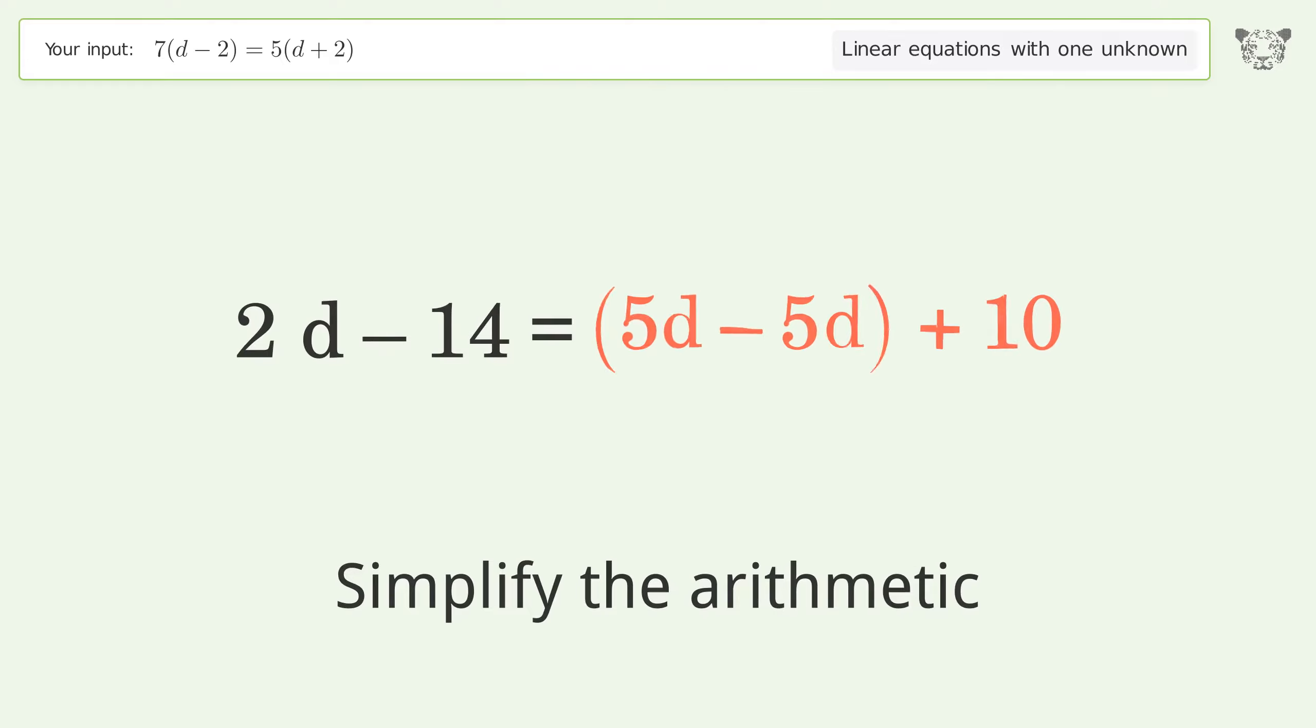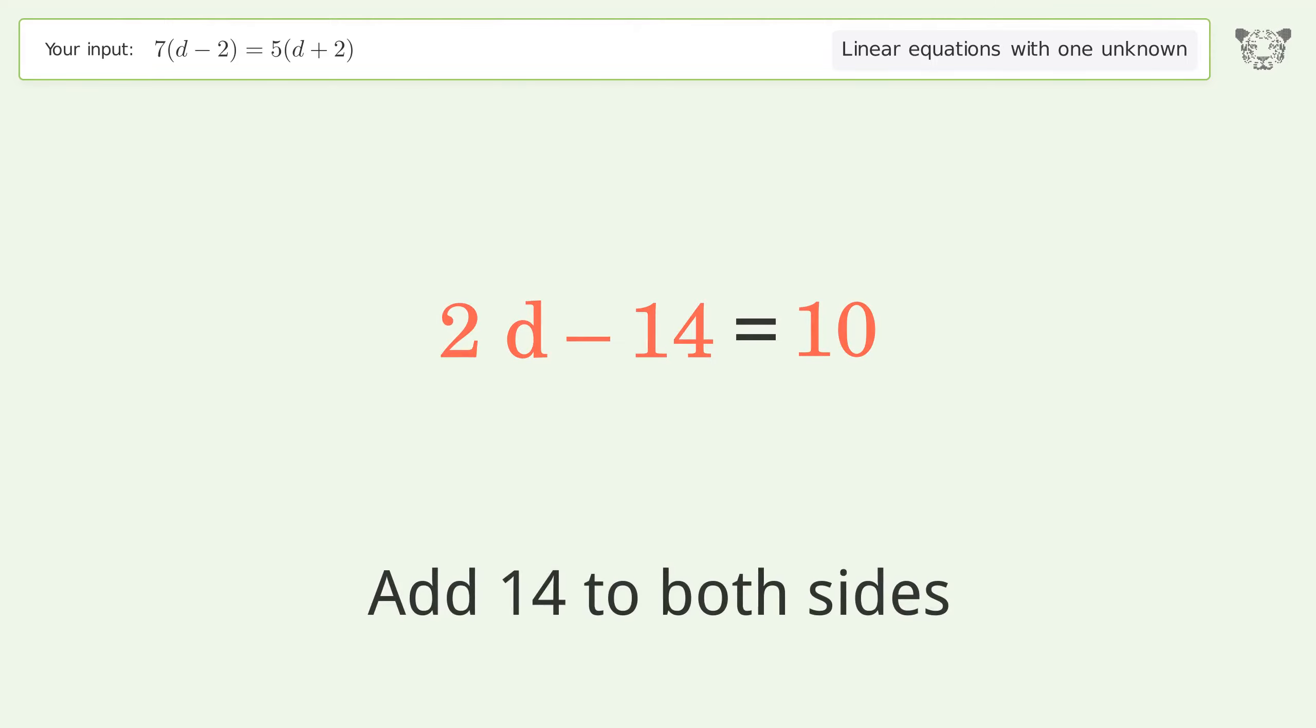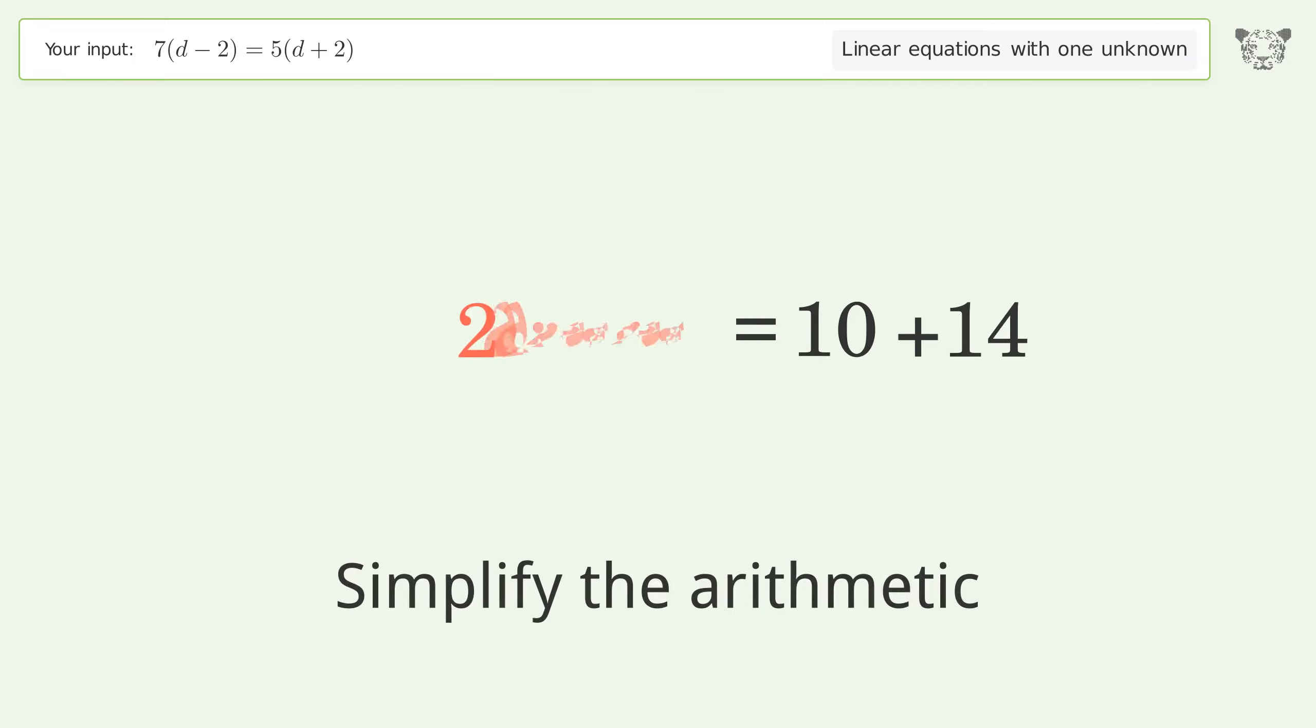Group like terms. Simplify the arithmetic. Group all constants on the right side of the equation. Add 14 to both sides. Simplify the arithmetic.